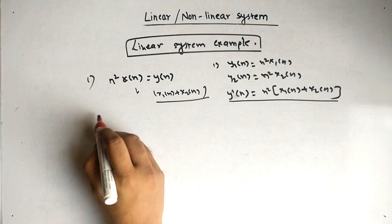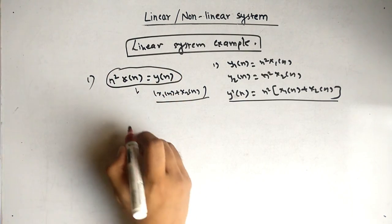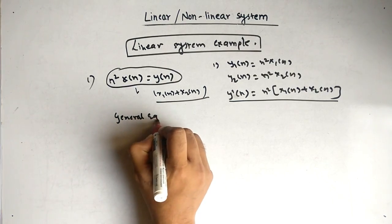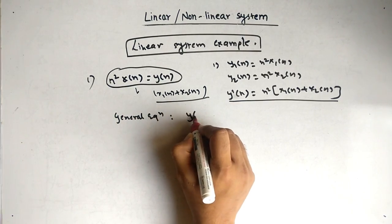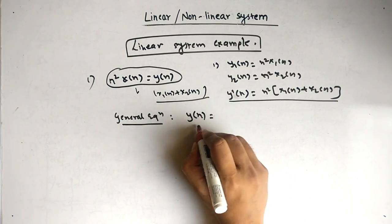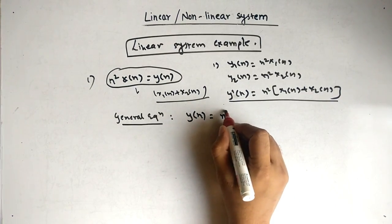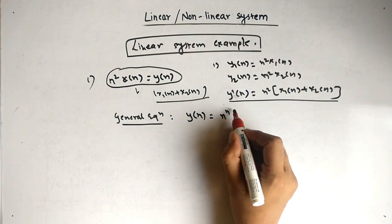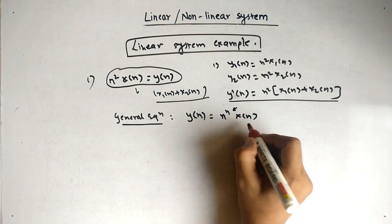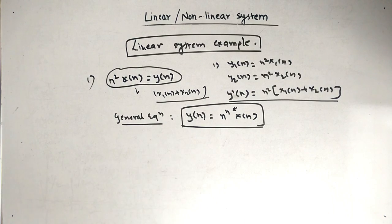This gives a very general equation. If we have y of n equal to n raised to any power — n can be any value: one, two, three, four — multiplied by x of n, then it is a linear equation.